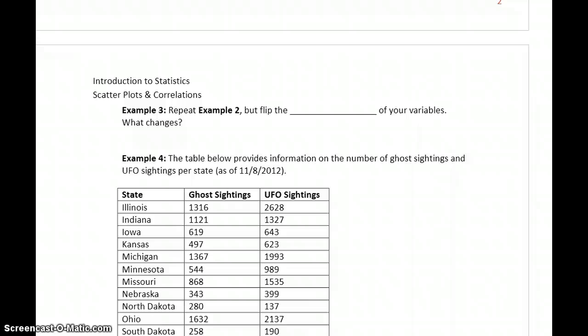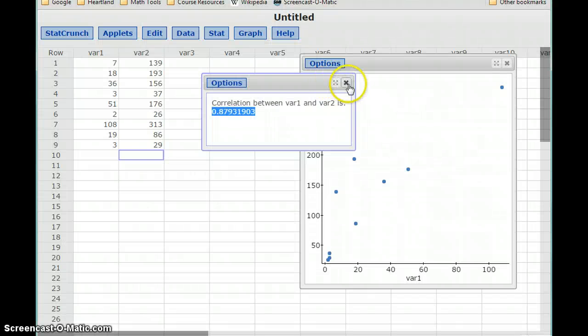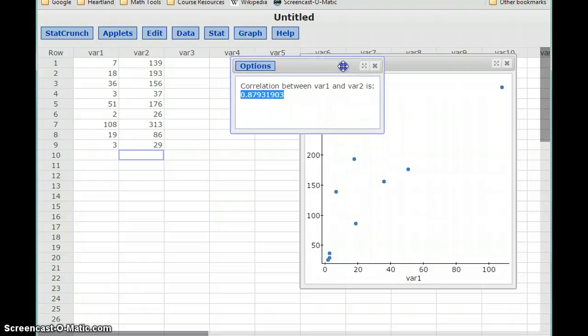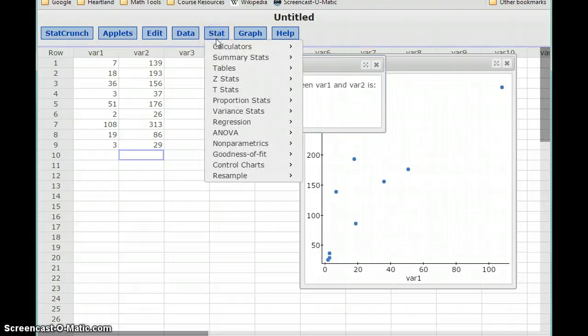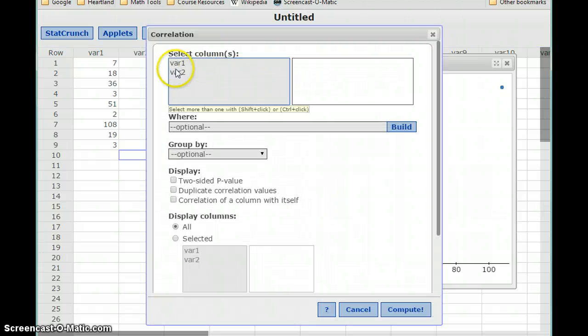So in example 3, we want to do essentially the same thing, but in this case we want to flip the order of our two variables to see what changes. So we have a correlation right now of 0.8793. We'll select Stat, Summary Stats, and Correlation, and this time I'm going to select the variables in the opposite order.